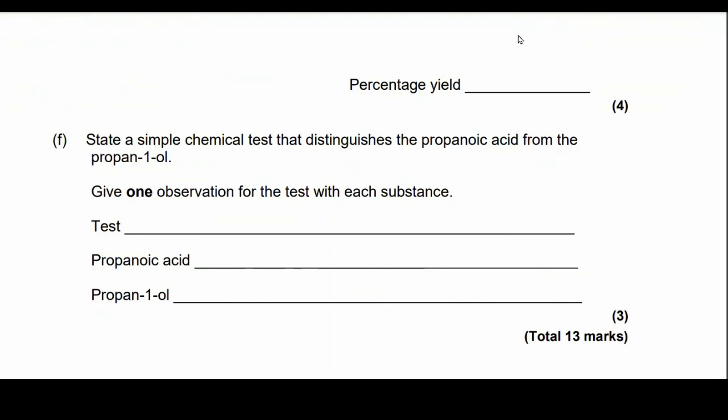Okay, let's move on. So the final part of this question, too, is state a simple chemical test that distinguishes the propanoic acid from the propanol. Give one observation with a test and the result for each substance. So the test we're going to do is add a carbonate. If you add a carbonate to any acid, it's going to bubble as it releases carbon dioxide gas. It's a neutralization reaction, but it releases CO2, which can turn limewater cloudy. Or you can just say you'll see bubbles with the acid. You won't see any bubbles formed with the alcohol. And that will get you 3 marks. Let's go.